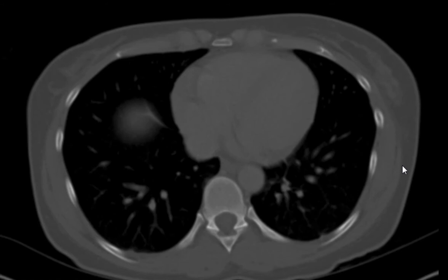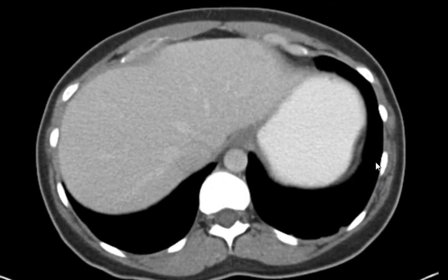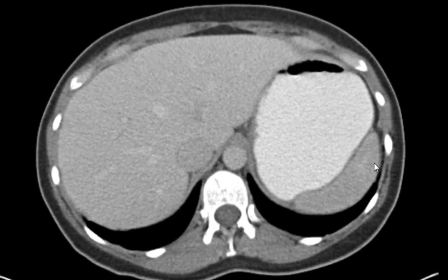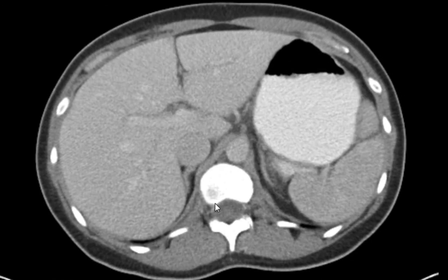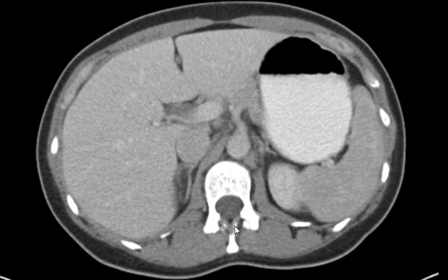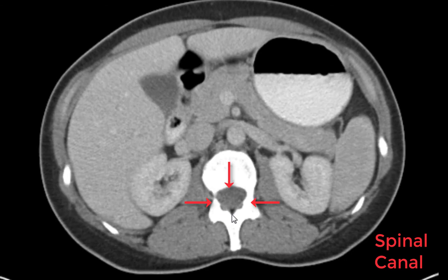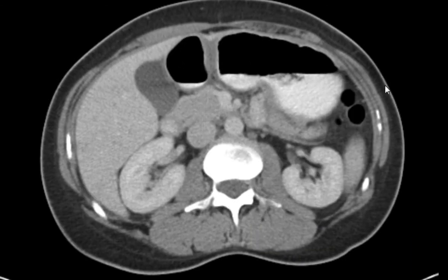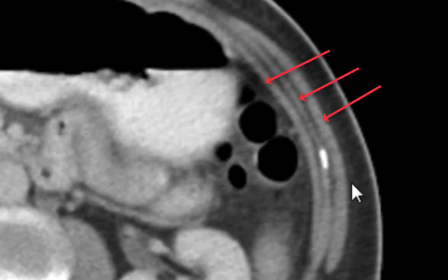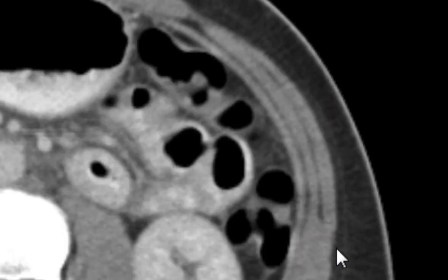Now turning the abdomen window back on and looking around the outside of the scan for anything out of the ordinary. Looking at the contents of the spine, the spinal canal, spinal cord — looking for masses there. You should be able to see the nice three layers of the abdominal wall: internal oblique, external oblique, transversus abdominus muscles. All look very normal.